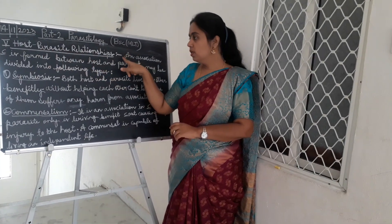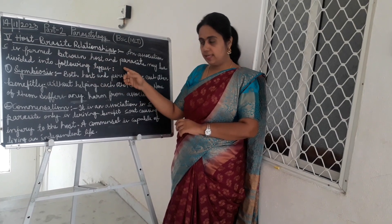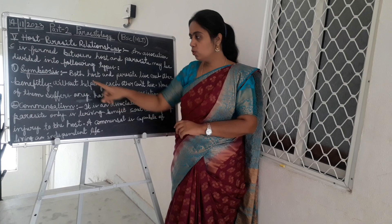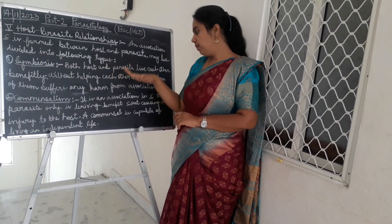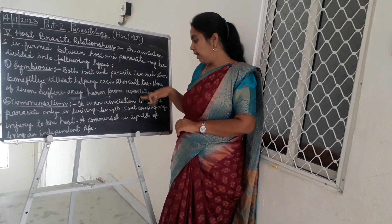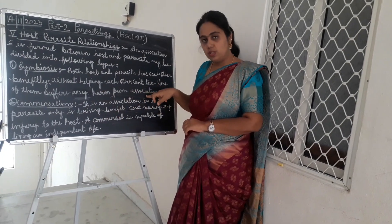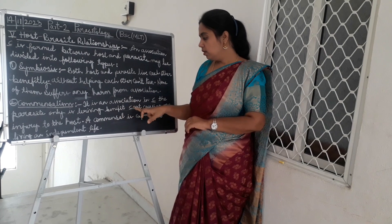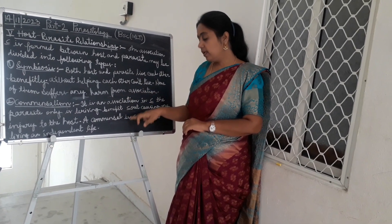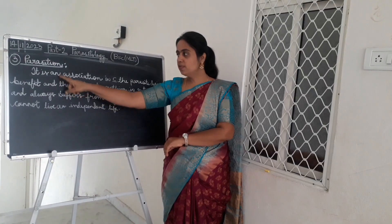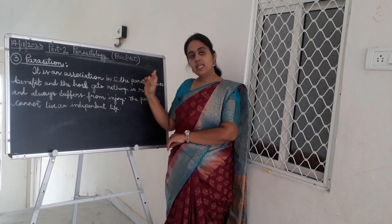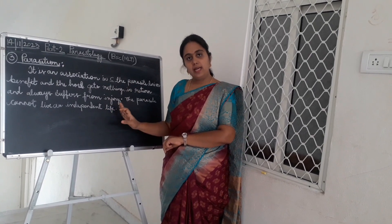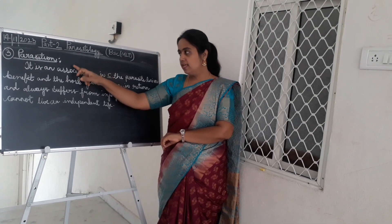Host and parasite relationship: an association formed between host and parasite may be divided into three types — symbiosis, commensalism, and parasitism. In symbiosis, both host and parasite benefit from each other and cannot survive without each other, and neither suffers harm. In commensalism, only the parasite derives benefit without causing any injury to the host, and the commensal is capable of living an independent life. In parasitism, the parasite derives benefit while the host suffers injury, and the parasite cannot live an independent life.